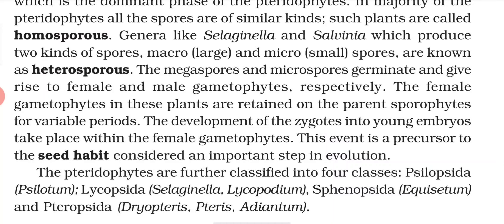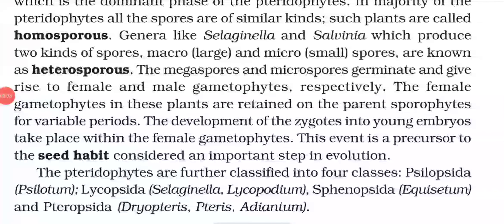Pteridophytes are further classified into four classes: first is Psilopsida, example Psilotum; second is Lycopsida, examples are Selaginella and Lycopodium; third is Sphenopsida, example is Equisetum; and fourth is Pteropsida, examples are Dryopteris, ferns, and Adiantum.